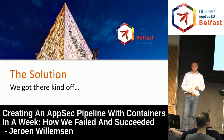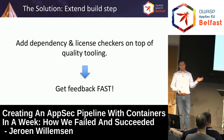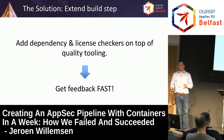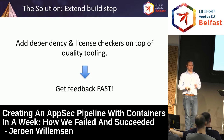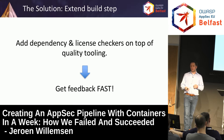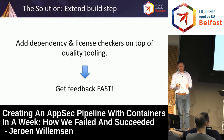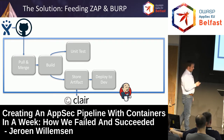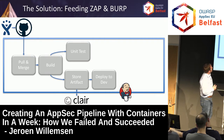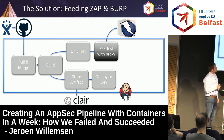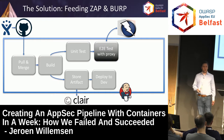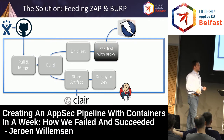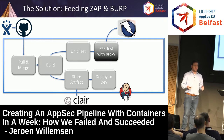So what was the solution? To get feedback as soon as possible, you add dependency and license checkers on top of the quality tooling you already have — a Maven plugin for your Maven build pipeline, a JavaScript plugin for your build pipeline. Make it really simple for developers to understand and give that feedback fast. Then we added Clair. The hard part is you have to teach ZAP and Burp how the applications work before you can use them. At the end of 2016 you had to do that using end-to-end integration tests.